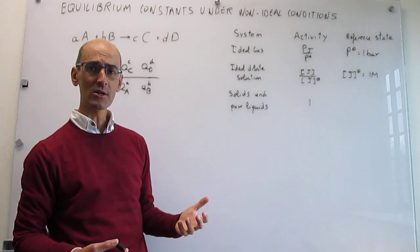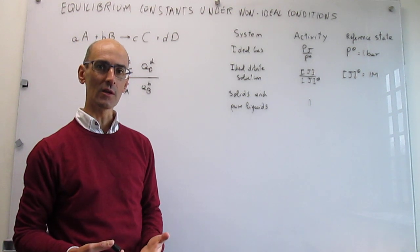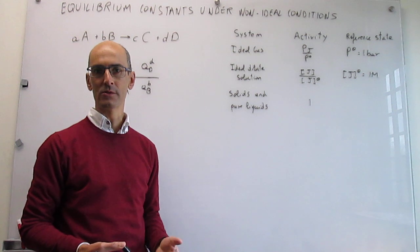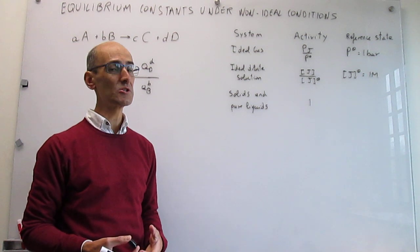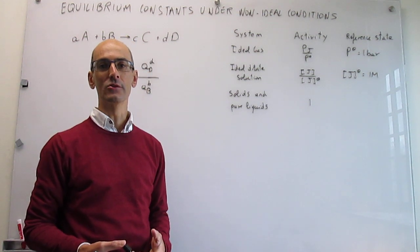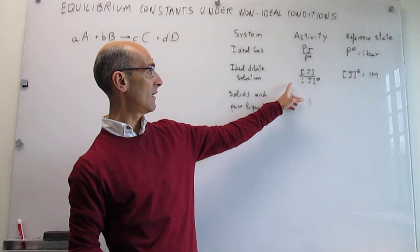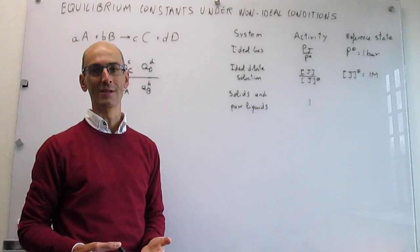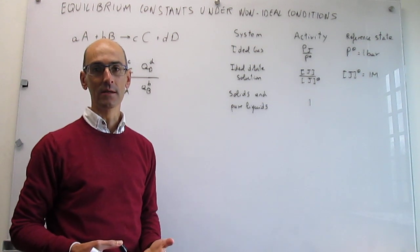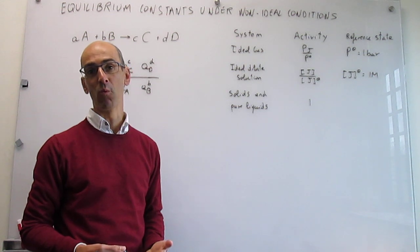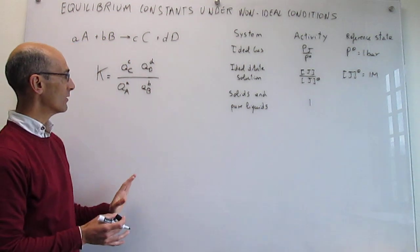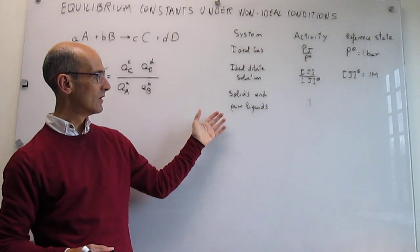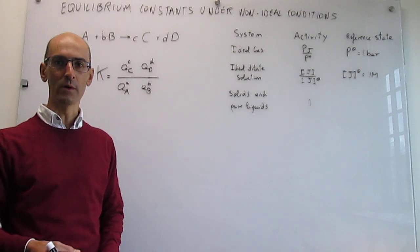If these are solutes in an ideal dilute solution — for example, a chemical reaction in a solvent like water with small amounts of reagents — that's ideal dilute solution conditions. In that case, the activities are simply the ratio of the molar concentration over the reference molar concentration at the standard state, which the community has agreed is one molar. If you have solids or a pure liquid, the activities are just one by definition.